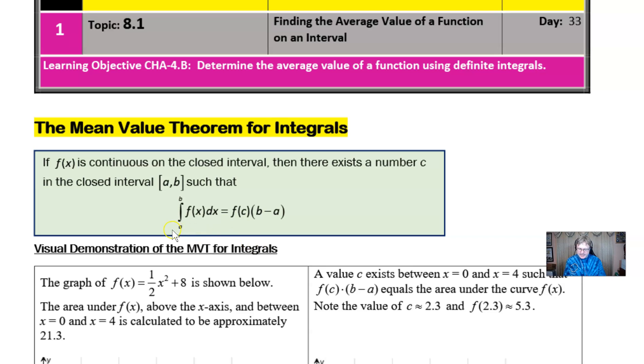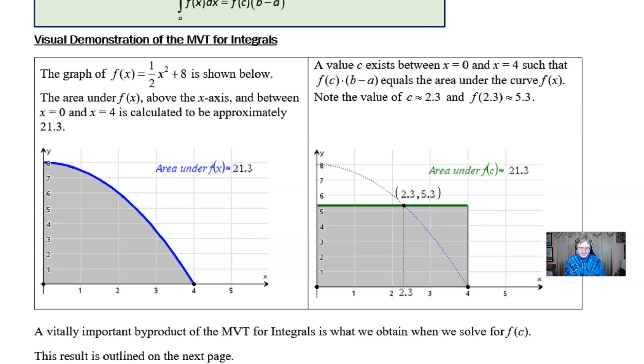the definite integral of f(x) from a to b is equivalent to f(c) times the difference between b and a, which probably means absolutely nothing to you, right? Maybe you're looking at this and thinking, well, that is area under the curve. That's great, because that's a start.